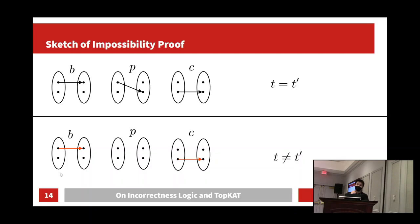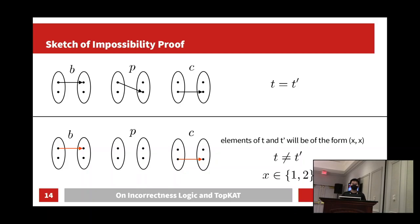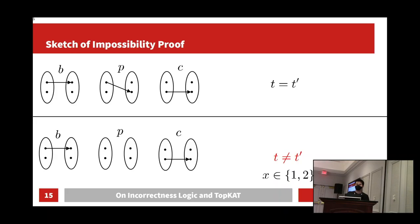Focusing on the second assignment, we notice there is nothing that can mutate the input — nothing takes the first memory to the second memory or vice versa. Therefore, the elements of T and T prime must all be of the form (X, X), where X is either the first or the second memory. And because T does not equal T prime, we can safely assume there exists (X, X) in T that is not in T prime.